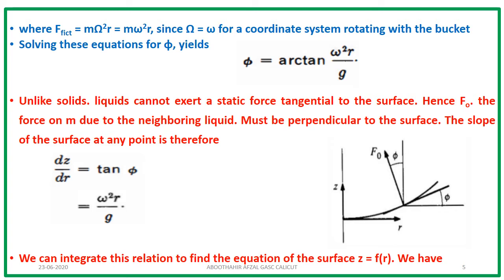Therefore the contact force — the force on m due to the neighboring liquid — must be perpendicular to the surface, meaning there is no displacement along the force direction and hence no work done. The work done by the contact force in this liquid case is zero because the liquid cannot sustain a tangential force due to its mobility. The slope of any point on the water surface is defined by dz/dr, where z is the coordinate of a point on the surface, and dz/dr equals tan φ.